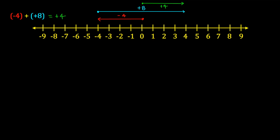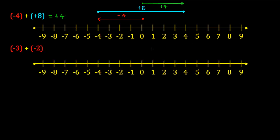Moving on. Now we have negative three added to negative two. So once again, I'll start with an arrow that starts at zero, and I will draw it three units to the left to represent my negative three.